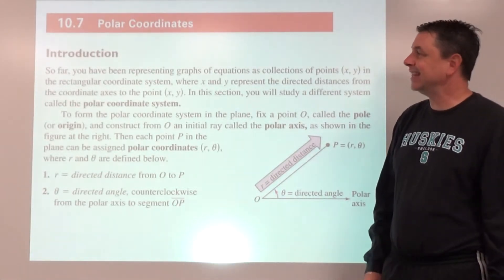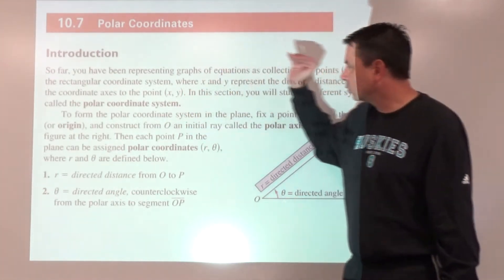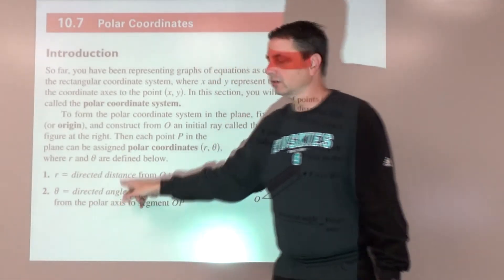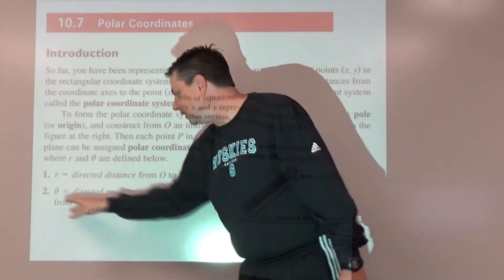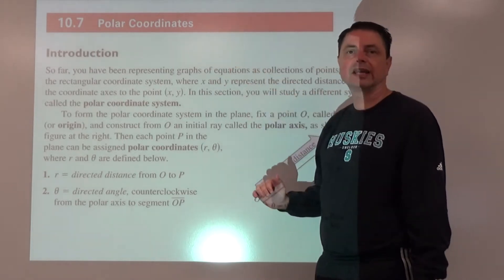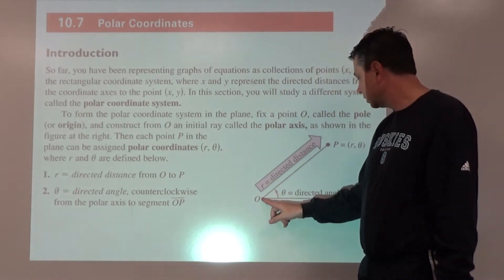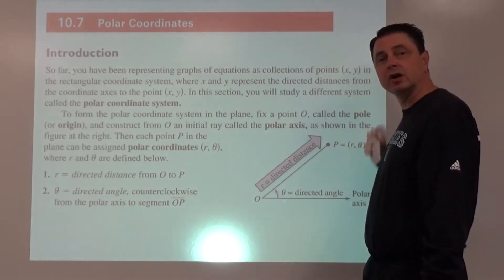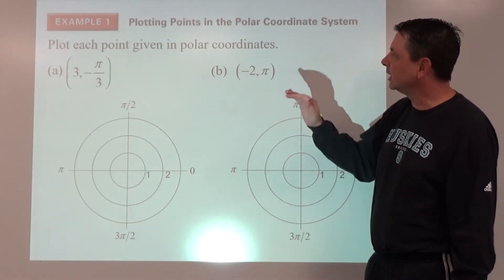Welcome to Hartman Math. This is lesson 10.7: Polar Coordinates. Instead of having an x and a y coordinate, we are going to have an r and a theta coordinate, where r is a directed distance from the origin to our point — it might be positive or negative — and theta is a directed angle. Angles can be positive rotating counterclockwise, or negative rotating clockwise. The coordinates are written as r comma theta: directed distance comma directed angle.